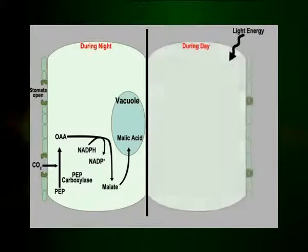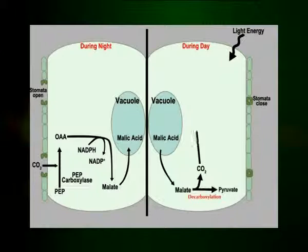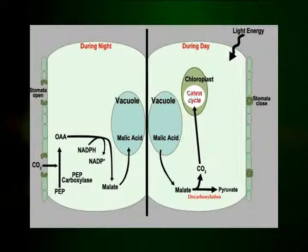During daytime, the stomata close and photosynthesis by the C3 cycle will quickly deplete the atmosphere within the leaf of all carbon dioxide. At this time, the malic acid is transported out of the vacuole to the cytoplasm of the cell. There it is decarboxylated and the carbon dioxide so produced enters the chloroplast and is used by the C3 cycle. Thus, photosynthesis continues with closed stomata.